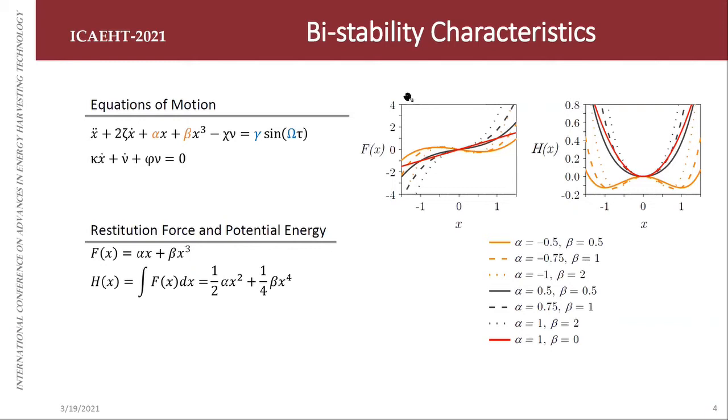Basically we can see theta here is a damping parameter. Chi here is an electromechanical parameter in the mechanical equation. Kappa here is the electromechanical parameter in the electrical equation. And phi here is the resistance parameter.